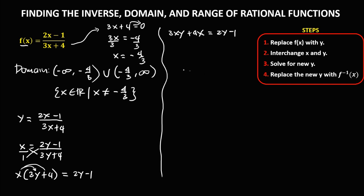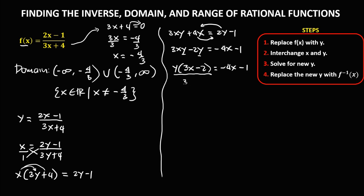Move all y terms to the left: 3xy minus 2y equals negative 4x minus 1. Factor out y: y times 3x minus 2 equals negative 4x minus 1. Divide both sides by 3x minus 2, so y equals negative 4x minus 1 over 3x minus 2.